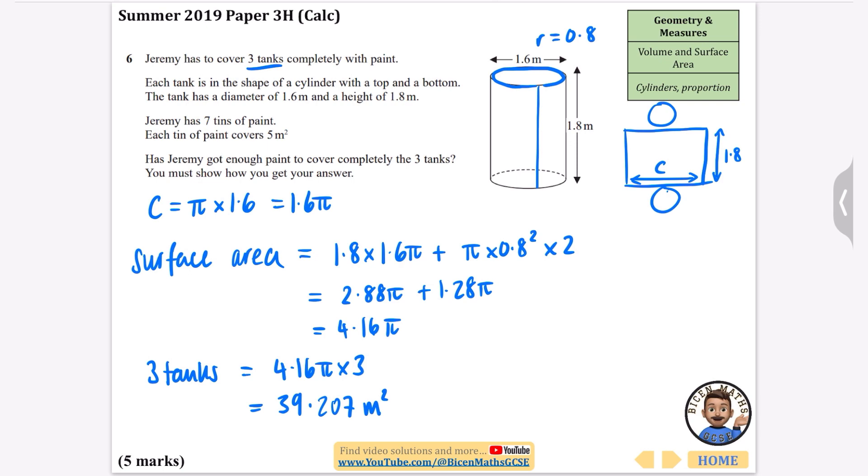Now I'll do this calculation: 4.16π × 3 equals 39.207 meters squared. Jeremy has seven tins of paint. Seven tins, if each one does 5 meters squared, is 7 × 5 = 35 meters squared. So Jeremy doesn't have enough because he needs 39 and only has 35. He needs 39.2 meters squared but only has 35, so he doesn't have enough.